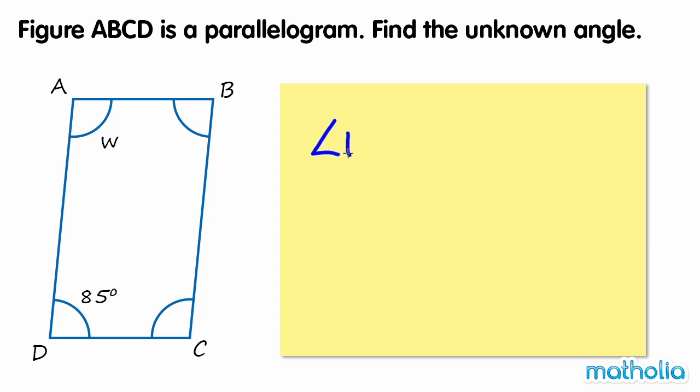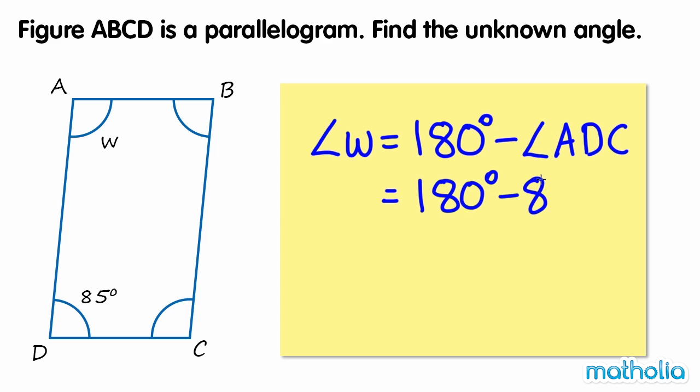So angle W can be found by subtracting angle ADC from 180 degrees. 180 degrees minus 85 degrees equals 95 degrees. So the unknown angle, angle W, is 95 degrees.